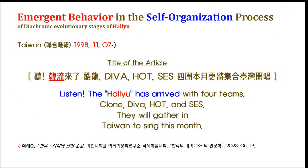On November 7th, 1998, Taiwan's Yan-hap Man-bo ran an article titled 'Listen, the Hallyu has arrived' featuring four teams — Clone, Diva, HOT, and SES — who gathered in Taiwan to perform that month. Through this article, we can confirm that the linguistic symbol 'Hallyu' first appeared in the world. In other words, K-pop concerts by Clone, Diva, HOT, and SES became a critical point and brought about an emergent behavior: the emergence of the linguistic symbol Hallyu.